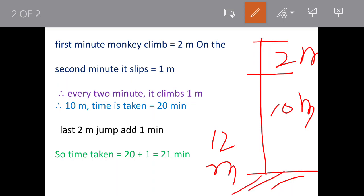First minute he climbs 2 meters, then the next minute he slips down by 1 meter. So every 2 minutes the monkey climbs 1 meter net. How much time will he take to climb 10 meters? It will be 10 times 2 equals 20 minutes.